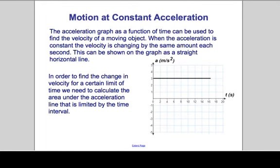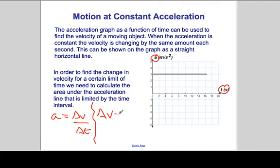So the area of this is the product of a and t. We know that acceleration is delta v per delta t. And that means delta v is acceleration times time. So the product of acceleration and time are the areas under the curve.